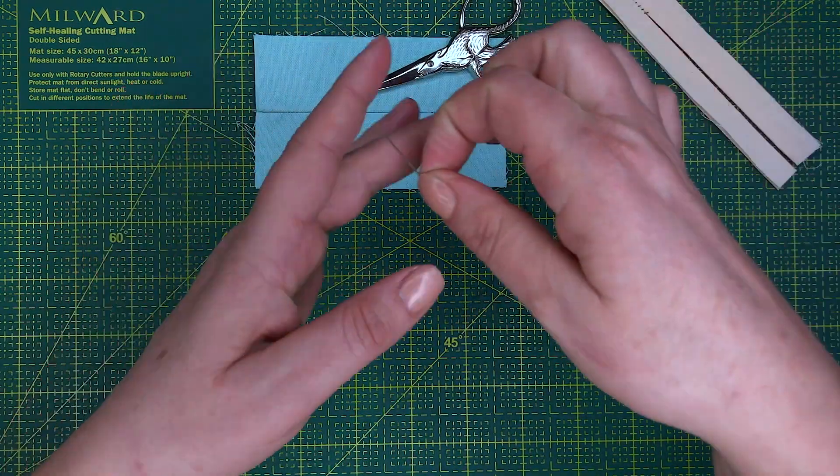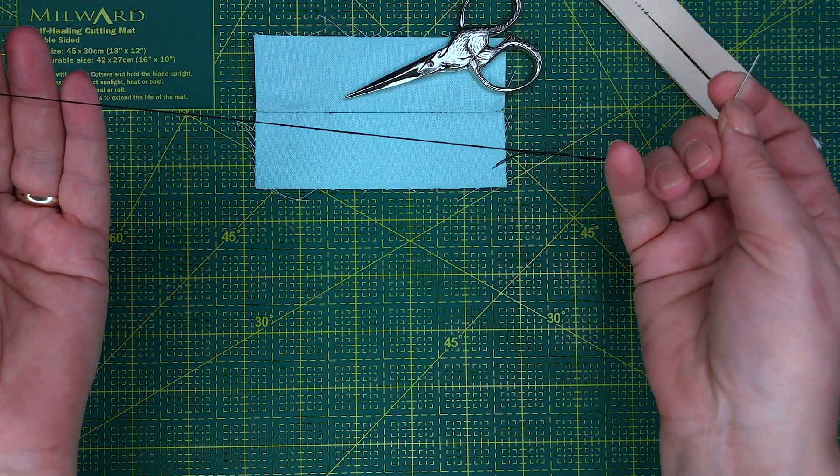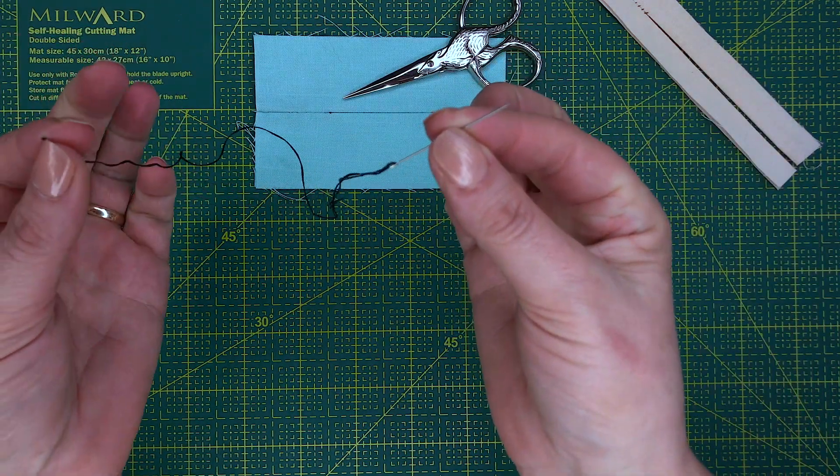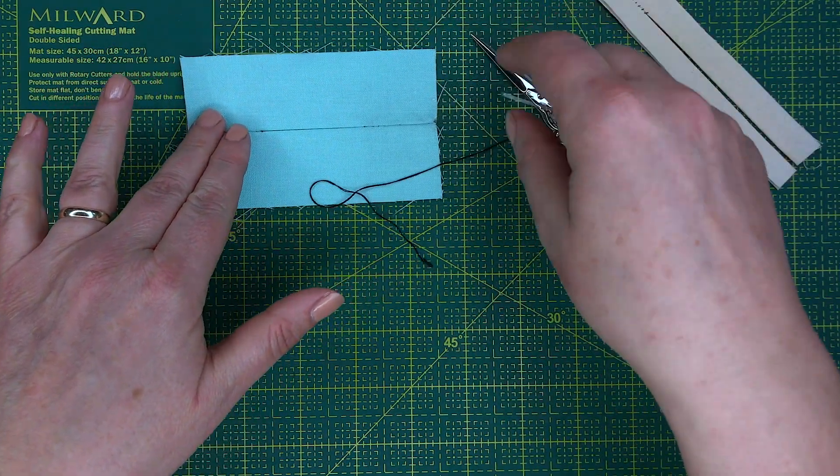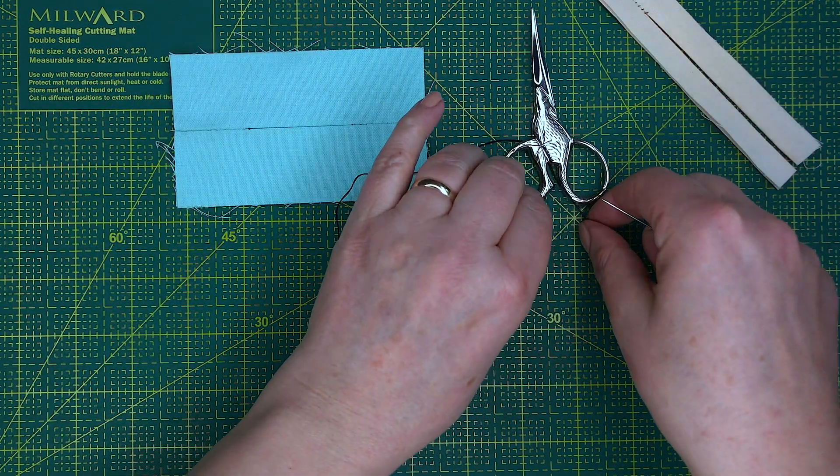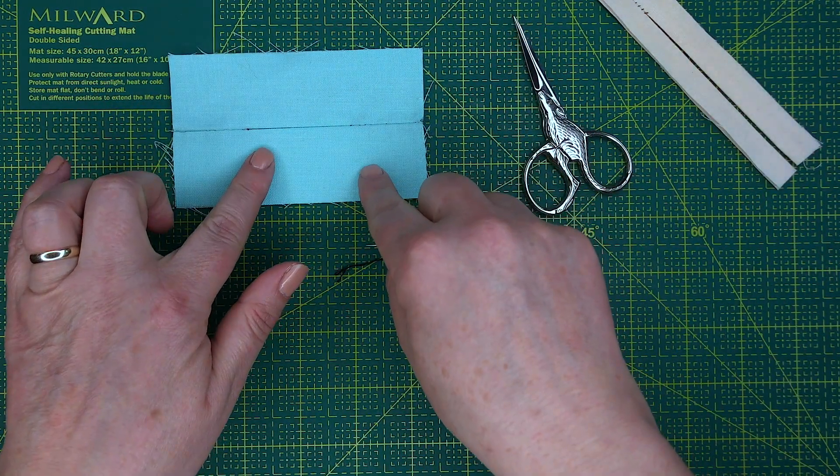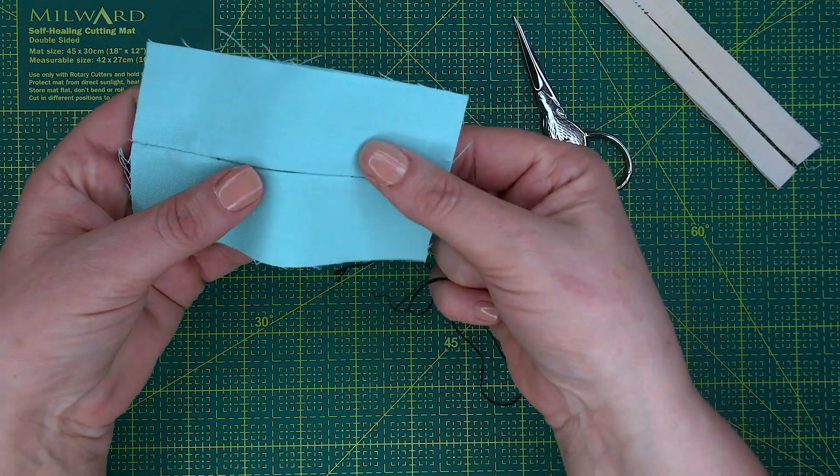Now for the purposes of this video I'm actually using two strands of black embroidery thread so you can see it, but ordinarily you would actually be using the same color thread as your material and this is what it would look like.